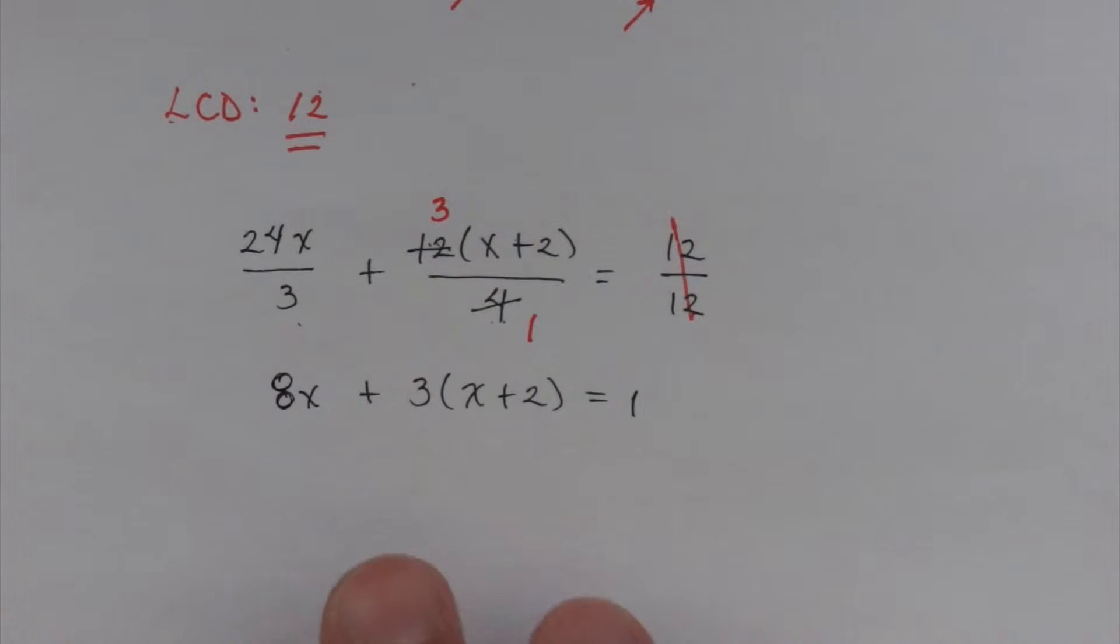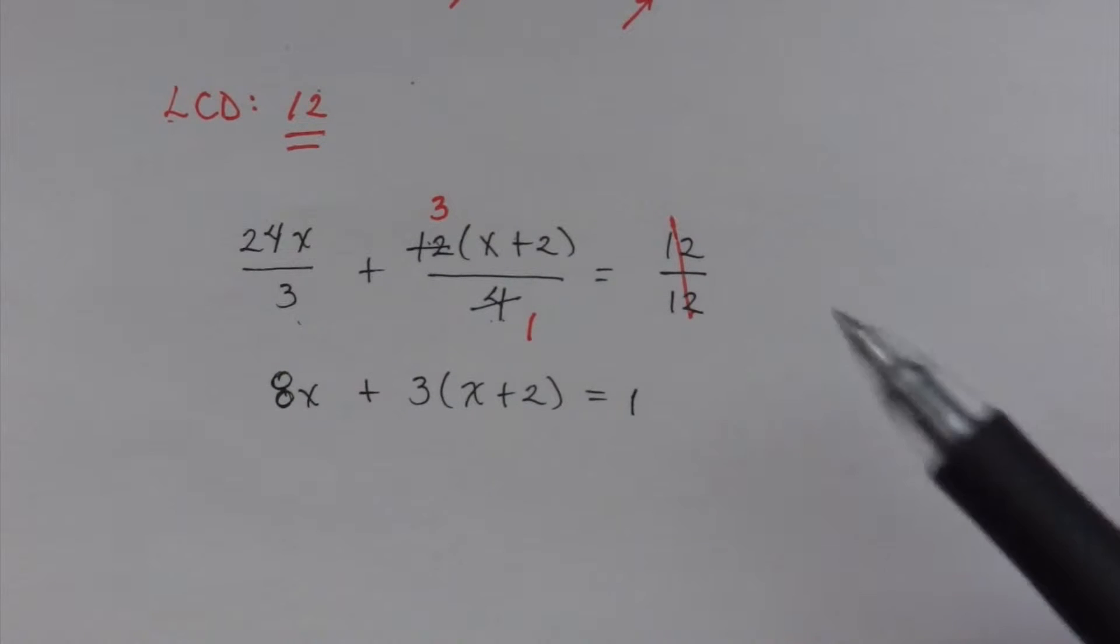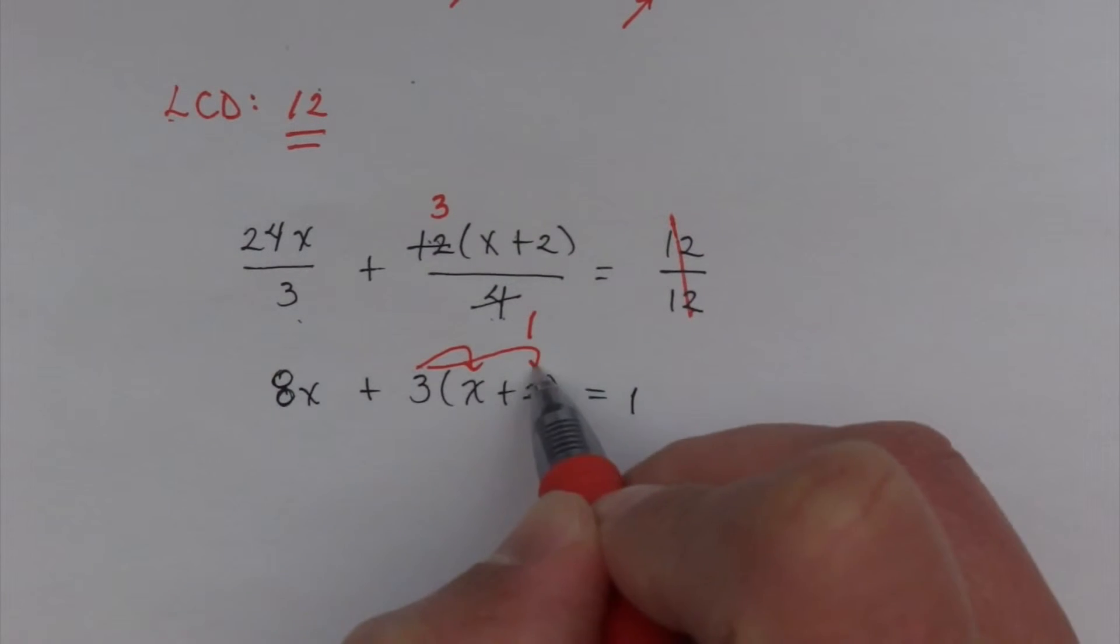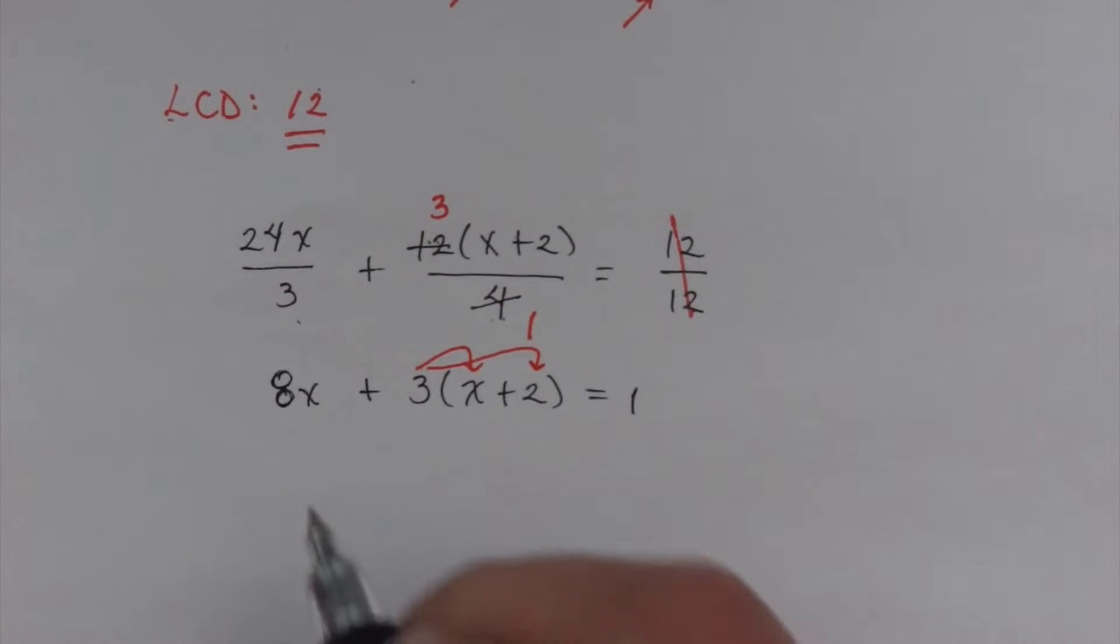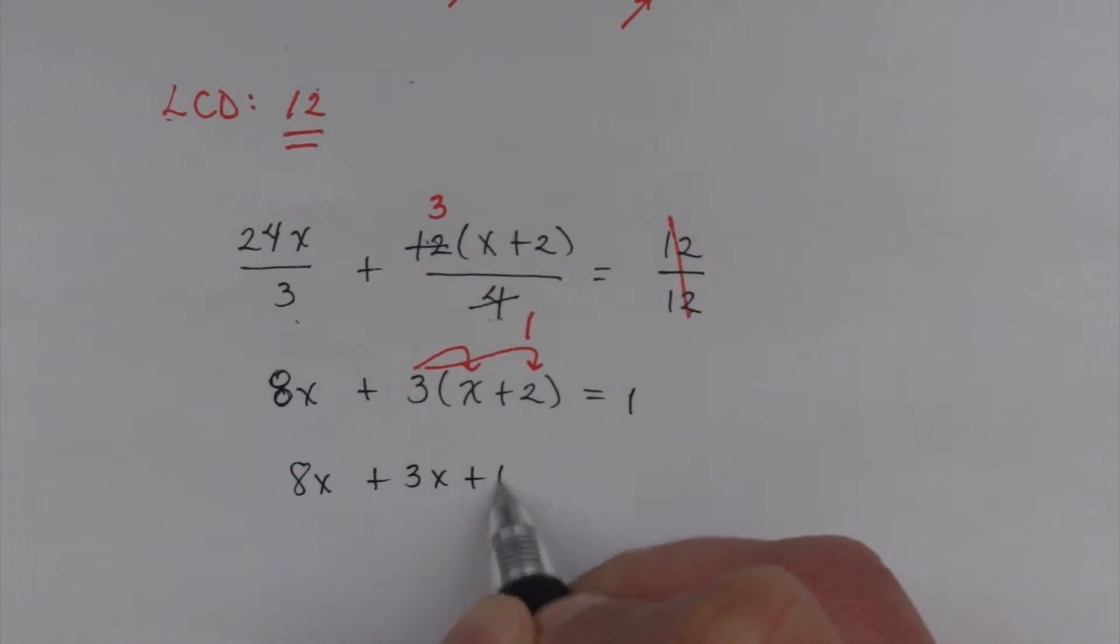Now if you notice, this is a lot easier to work with, and it's basically the same thing as we started with. Let's go ahead and solve it. I know I have a 3 out here next to that binomial, so I'm going to have to distribute. So I have 8x + 3x and then + 6. Don't forget to multiply the back. And then over here equals 1.